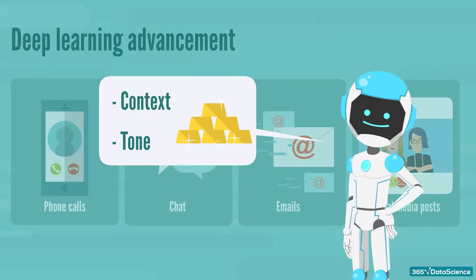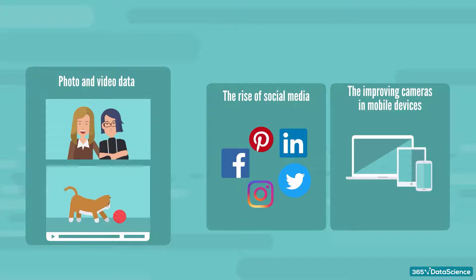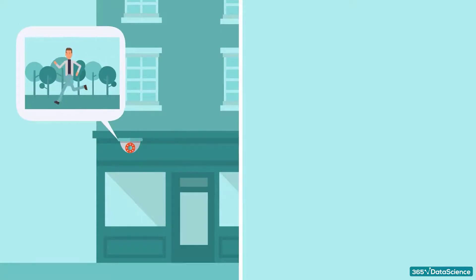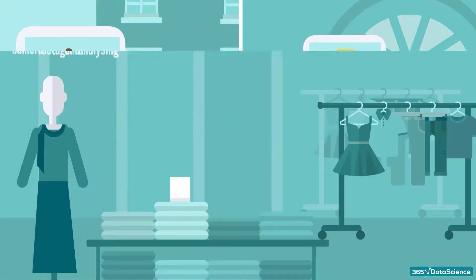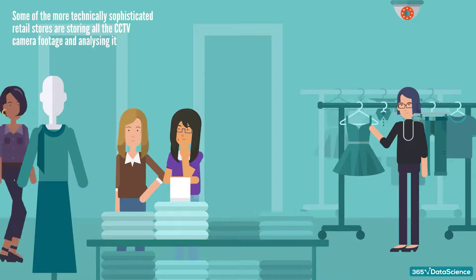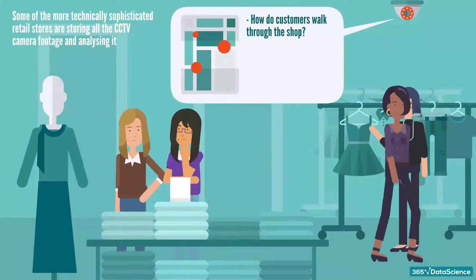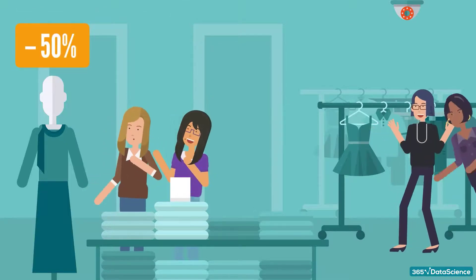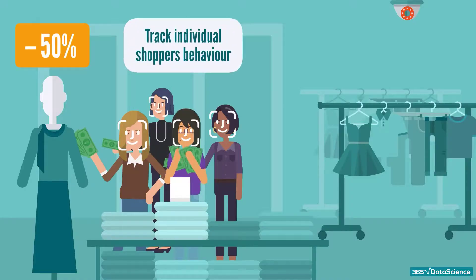The situation is very similar when it comes to photo and video data. The rise of social media and the constantly improving cameras and mobile devices create an abundance of such data. If we add the CCTV recordings produced in most big cities, as well as the data from our smart doorbells, then this source of data becomes even richer. Some of the more technically sophisticated retail stores are using CCTV camera footage and analysis to better understand how their customers walk through the shops, where they pay attention and for what duration, so they can make alterations to boost sales. The most tech-savvy are applying facial recognition algorithms to track individual shoppers' behaviors.